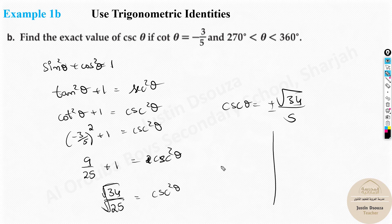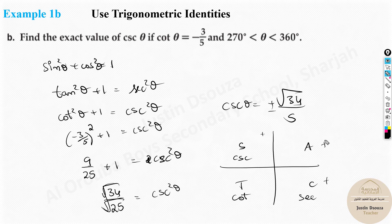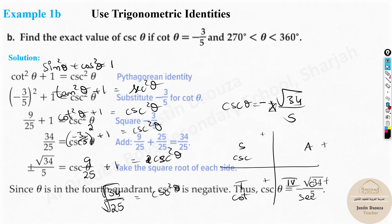To determine the sign, apply the CAST diagram. In the fourth quadrant, cosine and secant are positive, while sine and cosecant are negative. Since cosecant is negative in the fourth quadrant, the final answer is csc θ = −√34 / 5.